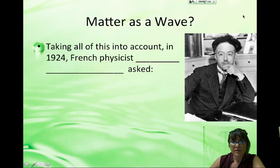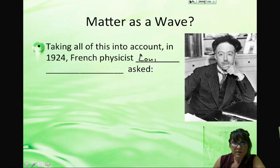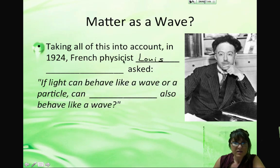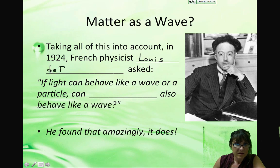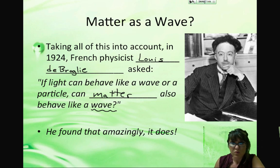There was a guy in 1924. His name is Louis de Broglie. And he asked, well, if light can behave like a wave, then could matter, which normally behaves like particles, also behave like a wave?